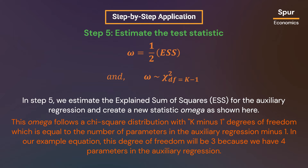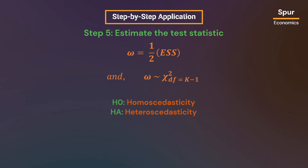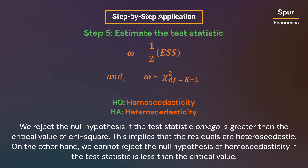In our example, the degree of freedom is three because we have four parameters in the auxiliary regression. The null and alternative hypotheses of the test are shown here. We reject the null hypothesis if the test statistic omega is greater than the critical value of chi-square, implying that the residuals are heteroscedastic. We cannot reject the null hypothesis of homoscedasticity if the test statistic is less than the critical value.